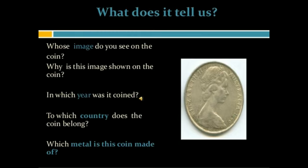Coins are another valuable source of information. They tell us about the ruling period of a king, the economy of the kingdom, and the business or trade relations with other countries. Coins can also give accurate information like the year to which they belong or about the ruler of that time.